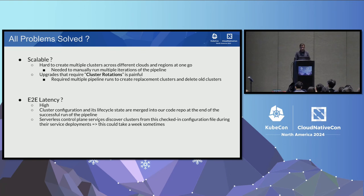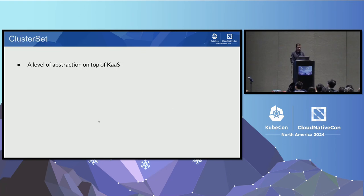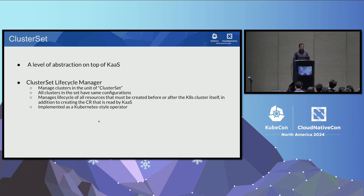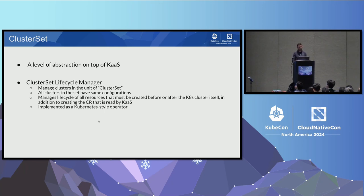To solve these problems, we created another level of abstraction on top of our KaaS abstraction. We built a Cluster Set Lifecycle Manager (CSLM) service, which manages clusters in units of cluster sets — where all clusters in the set share the same configurations. CSLM orchestrates and carries out all the steps that were present in the Spinnaker pipeline in a much more efficient and reliable way, and it is also deployed as a Kubernetes operator.